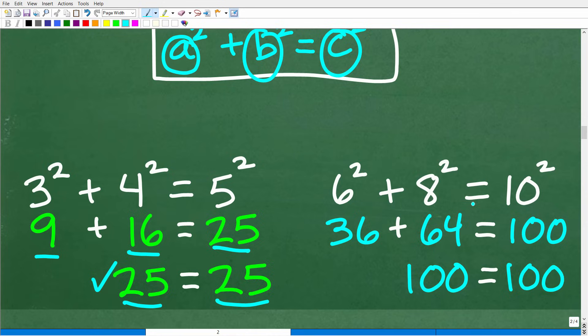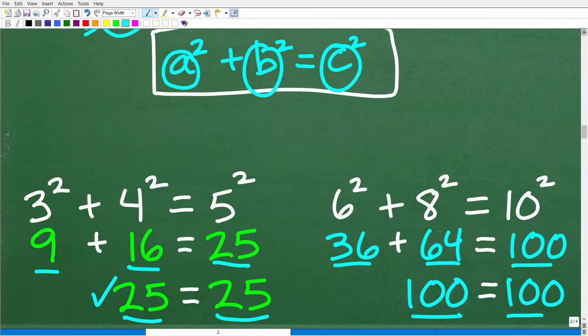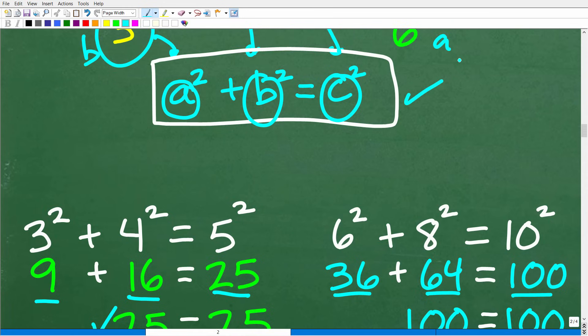How about six squared plus eight squared is equal to 10 squared? Well, six squared is 36. Eight squared is 64. And 36 and 64 is 100. 10 squared is 100. 100 is equal to 100. Okay, so you can kind of see here that we can definitely use the Pythagorean Theorem to check to see if our lovely room is square.